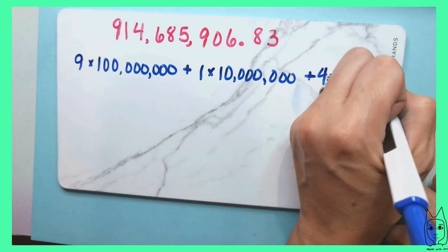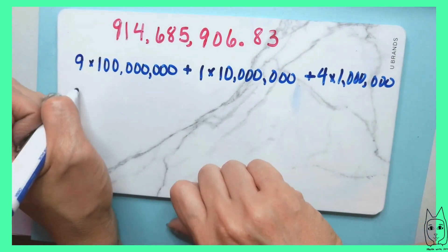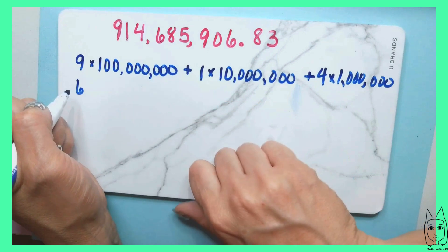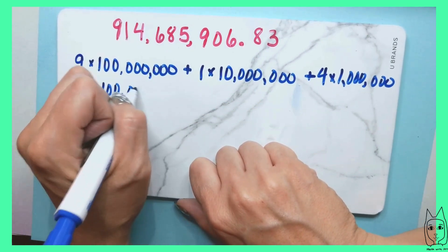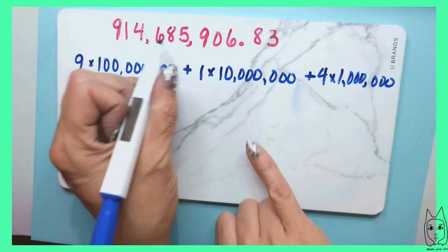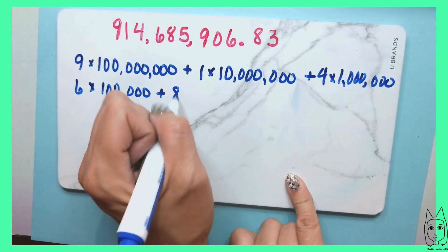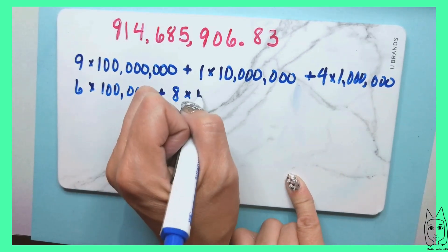See if I can squeeze it in here. And we would have the six is in the hundred thousands, so 6 times 100,000. Then I have eight in the ten thousands. So 8 times 10,000.